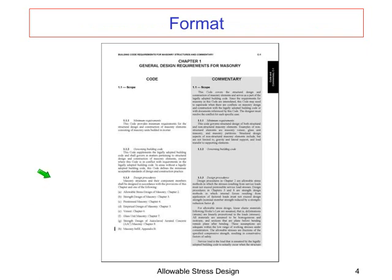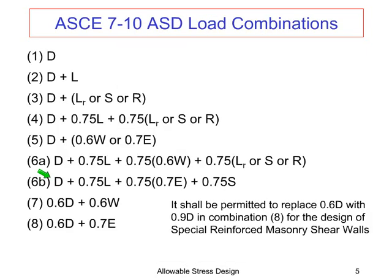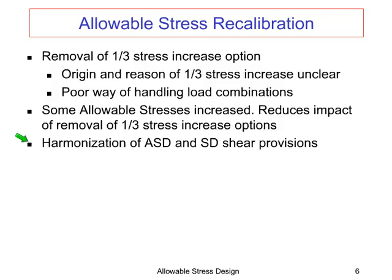Here's the format — the code and commentary will now be side-by-side, so hopefully that will make it easier for users. Here are the ASCE 7-10 load combinations. When we get to wind, we now have a 0.6 wind factor in allowable stress design, because wind loads are now calculated in ASCE 7-10 at a strength level, similar to what seismic loads have been for several cycles.